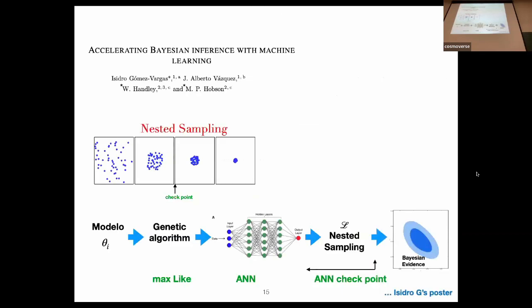Very recently, we were able to speed up the calculations of the nested sampler. With genetic algorithms, we constructed the artificial neural network to train the calculations of the likelihoods. To produce the training data, we used genetic algorithms instead of random samples. Once we built the artificial neural network, we trained the likelihood.